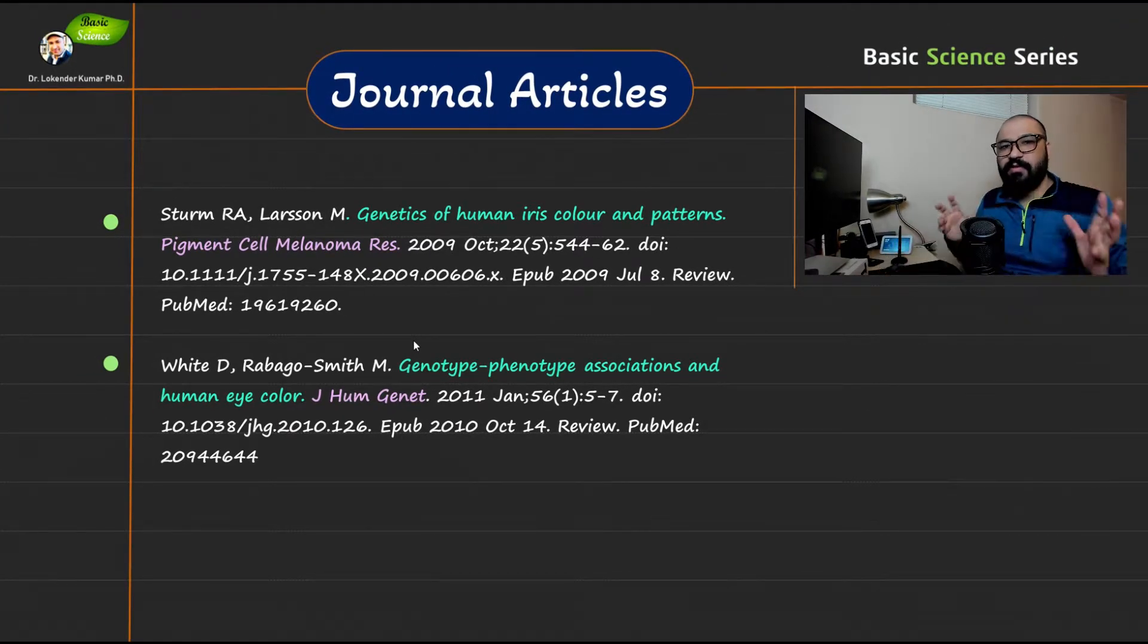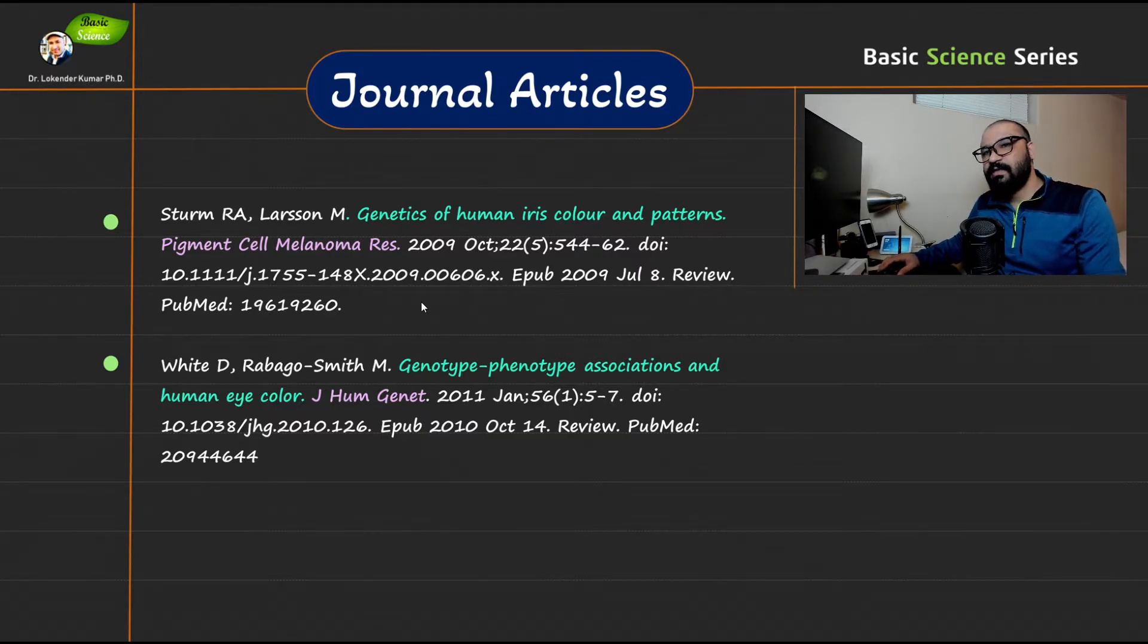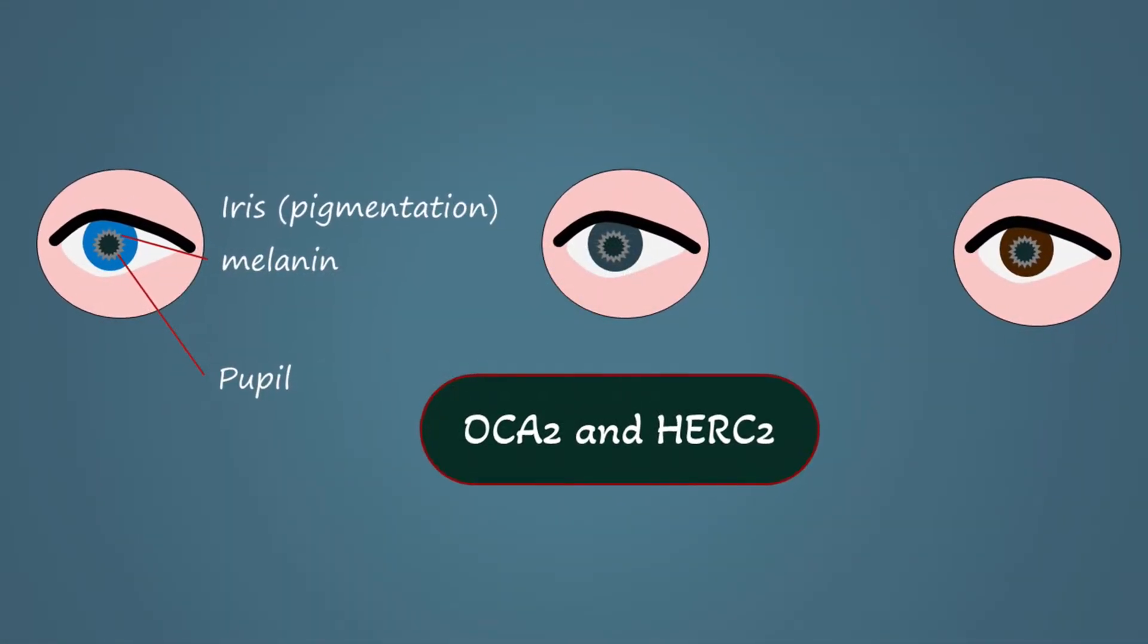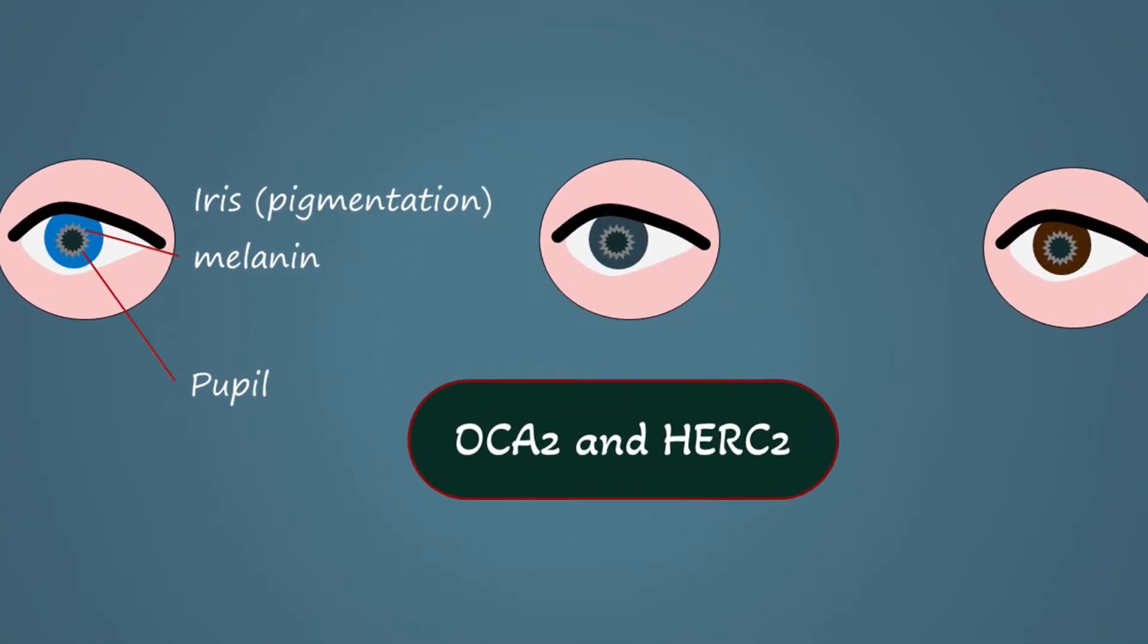After finishing this particular presentation, I will give you a brief tutorial of the Protein Databank and UniProt to see what are the structures of these particular proteins that are associated with human eye color. So it's going to be a fun video presentation, and I hope that you're going to understand how the human eye color is controlled by the genes and how those genes are expressed.